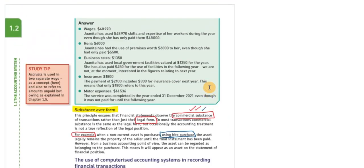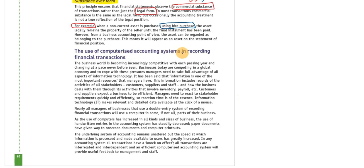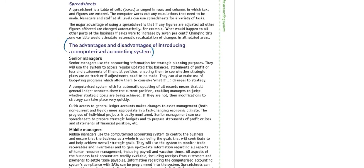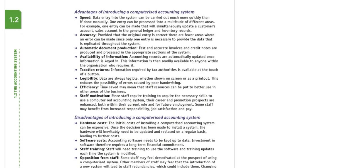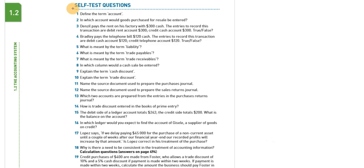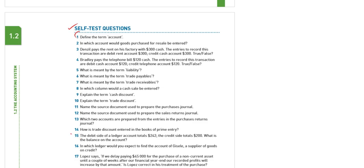We have now completed all accounting concepts and chapter 1.2 is finished. You need to recall all accounting concepts and principles twice. Also read the section on computerized accounting systems — advantages and disadvantages — which is mainly book reading and not heavily exam-focused. Your homework is to solve self-test questions 1 to 15. I will give you questions 16 onward next time. If you have any problems, you can discuss.